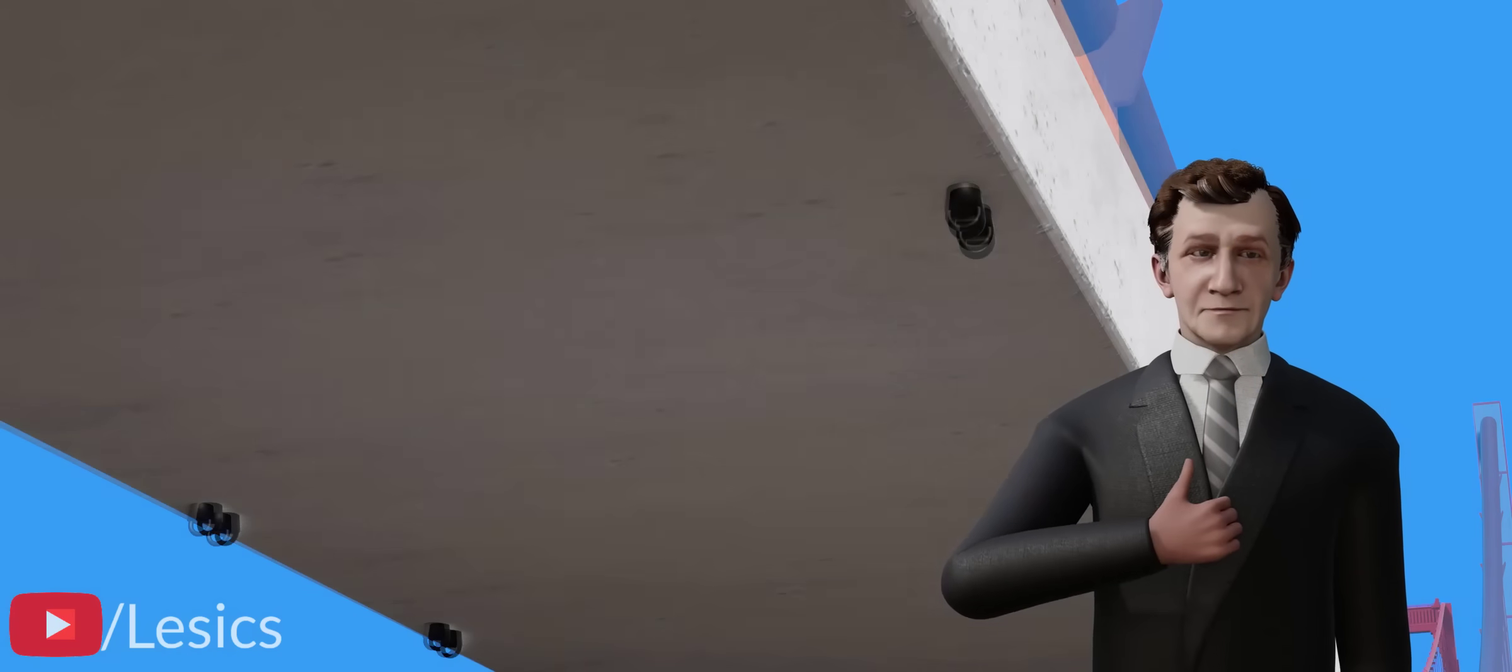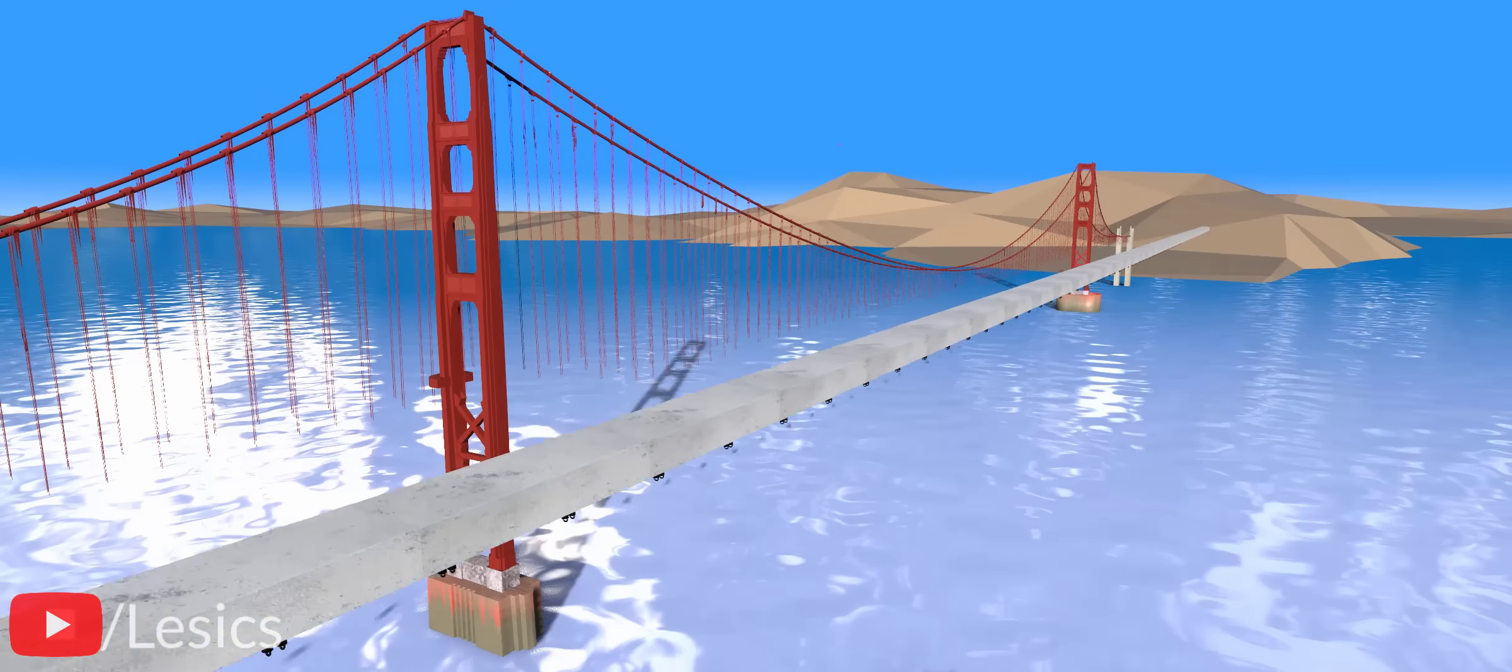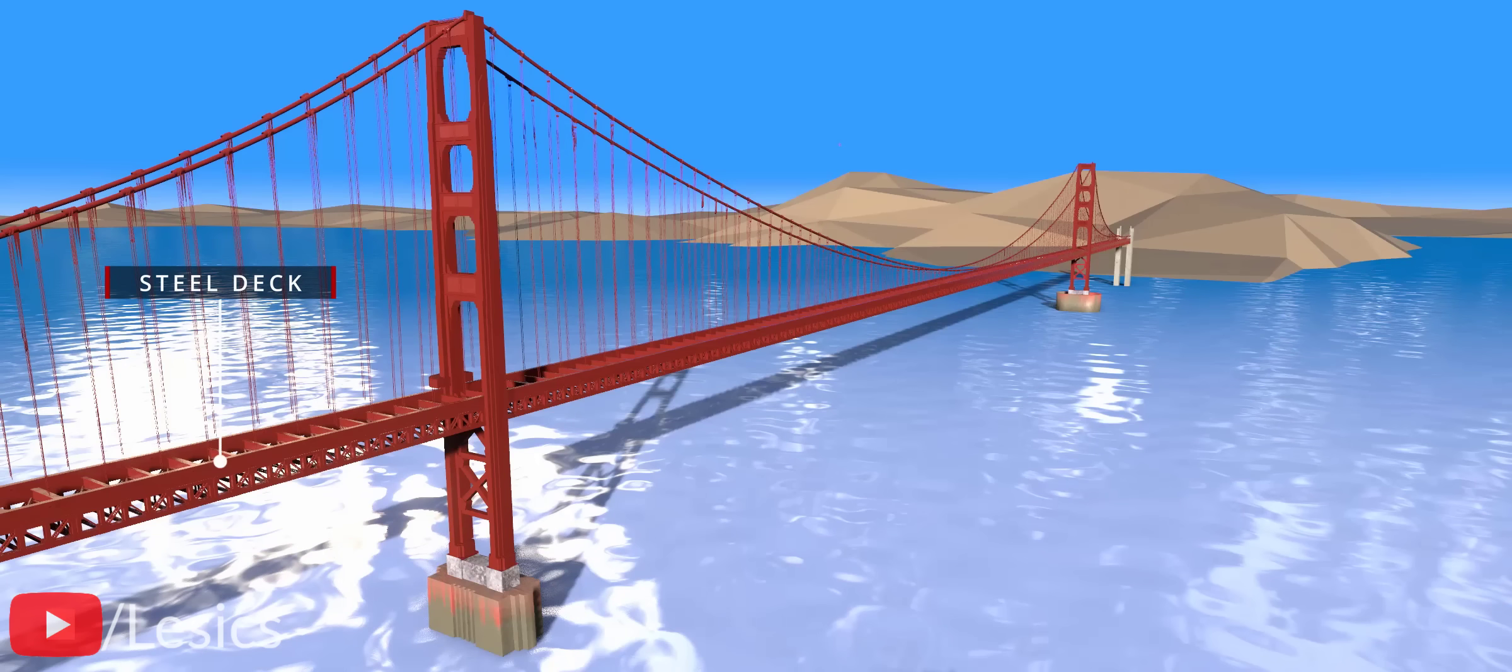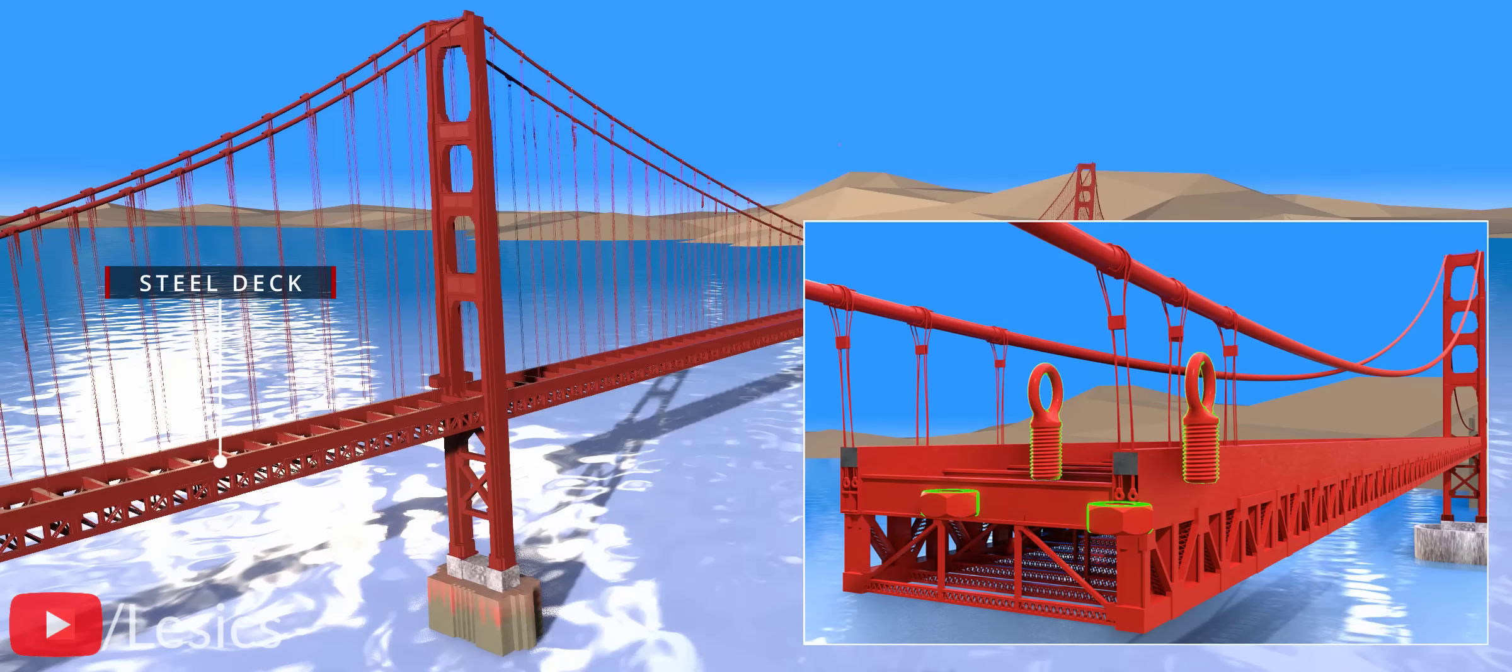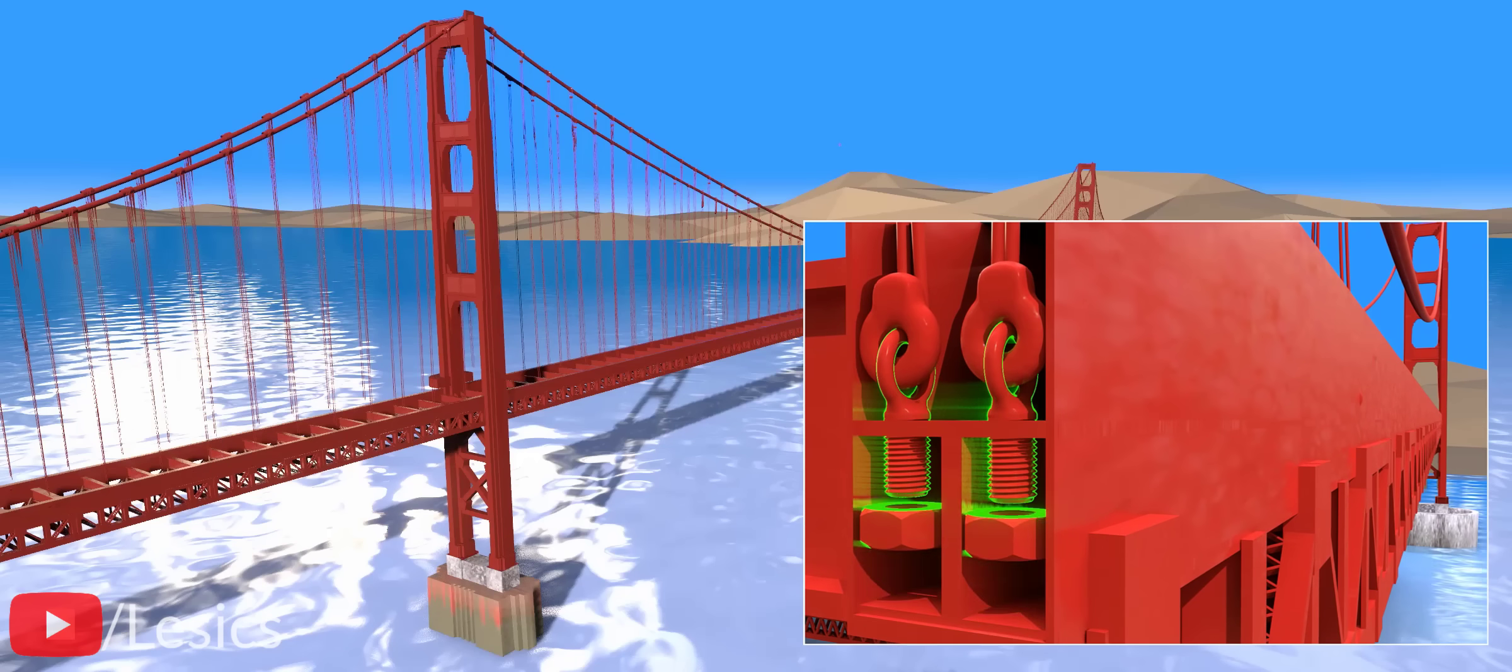Let's see how Mr. Strauss solved this problem. Mr. Strauss decided to connect the suspenders to a steel structure. Steel-to-steel connection is always strong. The details of the connection between the suspenders and steel structure are illustrated here.